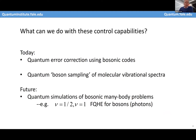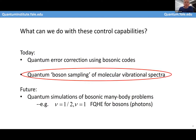What can we do with these control capabilities? We can do quantum error correction with various bosonic codes — these are the only ones that have actually reached break-even; surface code work is still very far away. We can do boson sampling simulations of molecular vibrational spectra. And someday we hope to do quantum simulations of interacting many-body boson problems, for example the bosonic fractional quantum Hall effect where the bosons are microwave photons.